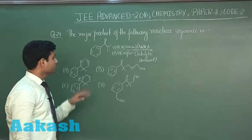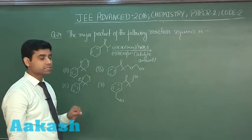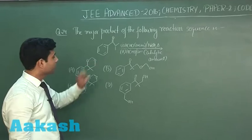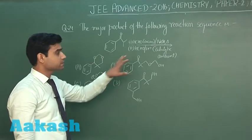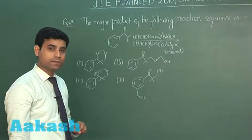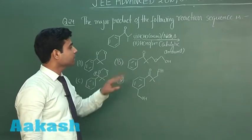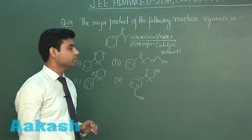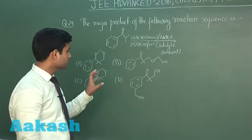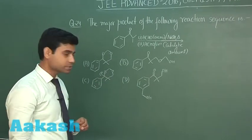This is the question, the major product of the following reaction sequence is. We have HCHO in excess with sodium hydroxide and we have heated it. And then in the second step, we have HCHO in presence of H+ which is present in the catalytic amount. Let us see what will happen in this reaction.